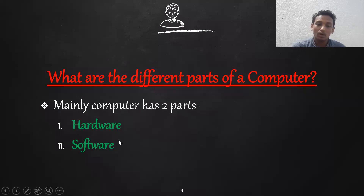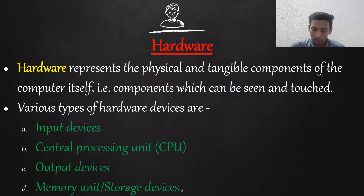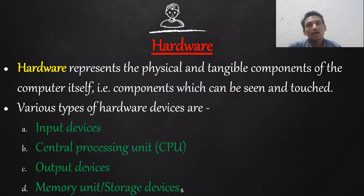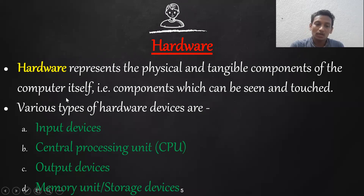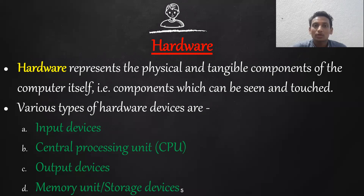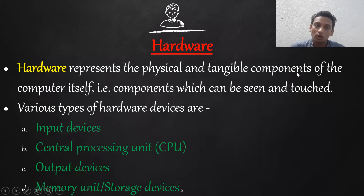Now let's look at hardware and software. Hardware represents the physical and tangible component of the computer itself. Tangible means the component which can be seen and touched. The parts of a computer that we can see and touch are called computer hardware. So by definition, hardware represents the physical and tangible components of the computer — that is, components which can be seen and touched.